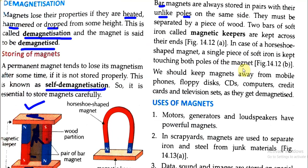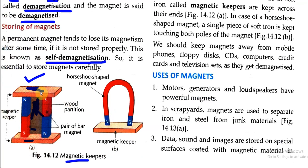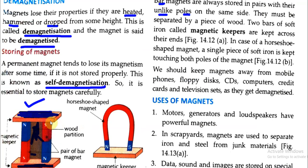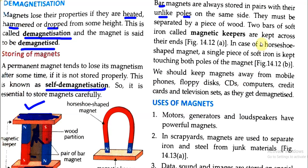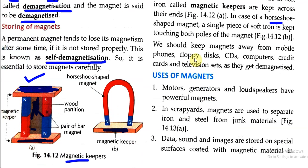Two bars of soft iron called magnetic keepers are placed across the ends at the corners. These are iron bars — two pieces of iron placed on top and bottom — because the magnet will attract them and they will stick together. This is how the system is set up to store bar magnets. In the case of a horseshoe magnet, a single piece of soft iron is kept touching both poles of the magnet to preserve its magnetism for a long period.